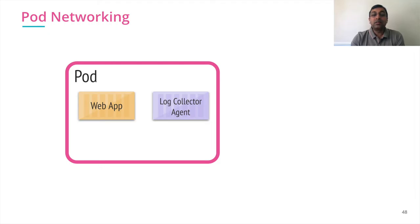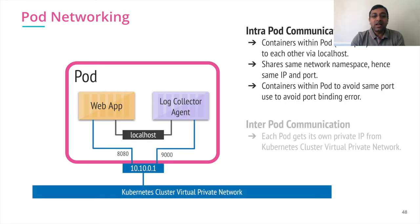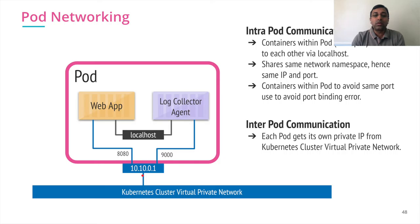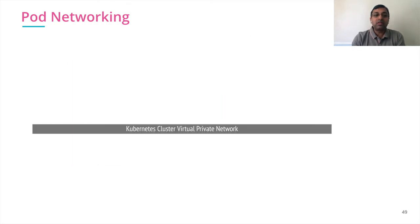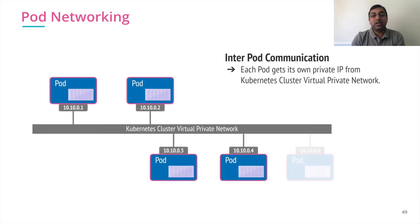One of the key concepts for understanding pods is pod networking. Two containers within a pod share the network namespace, so they can talk to each other via simple localhost. The Kubernetes cluster runs its own virtual private network, so networking within the cluster is independent of the outside network. From that virtual private network, each pod gets assigned one unique IP address, and multiple pods in the Kubernetes cluster talk to each other via those IP addresses.